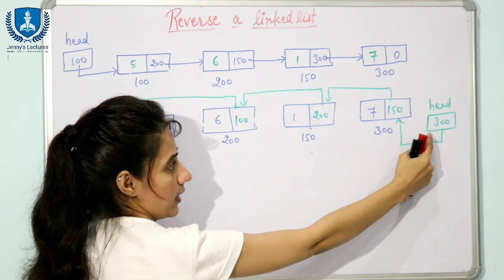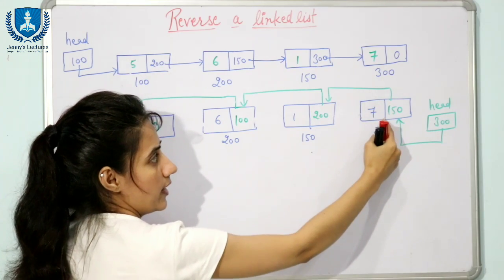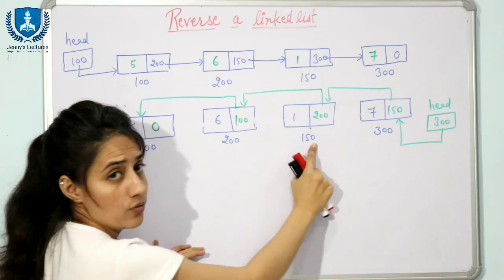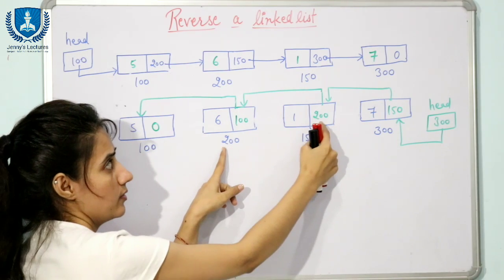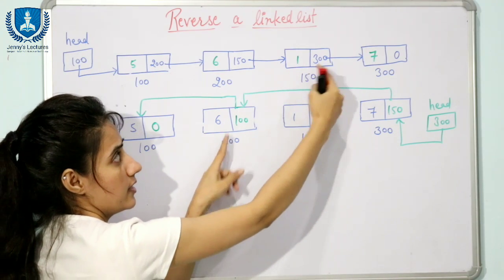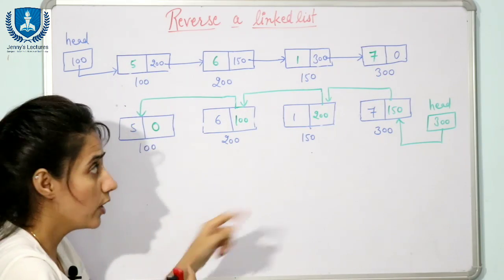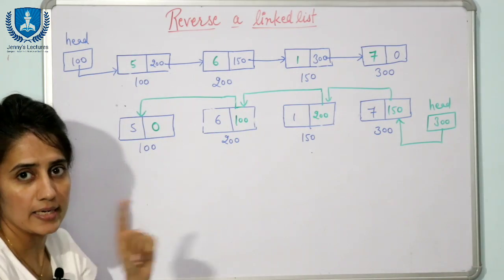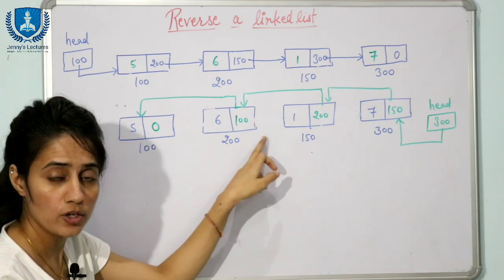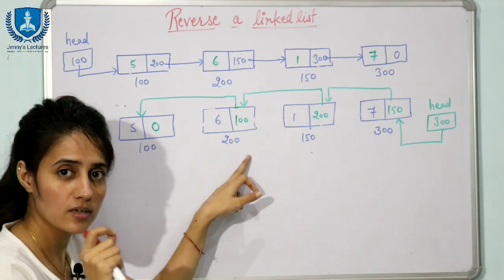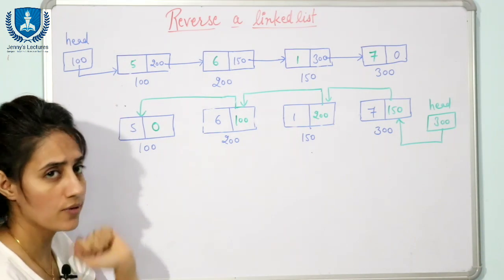After reversing, head is going to contain 300. This node will contain the address of its previous node, which is 150. The next node will contain 200, and so on — we reverse all the links. When you display the linked list after reversing, the output should be 7, 1, 6, and 5.